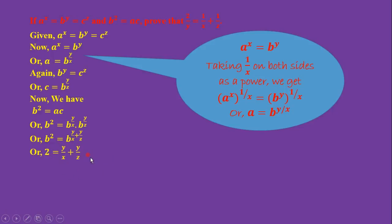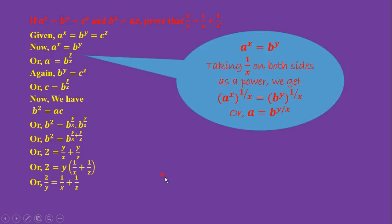We can write 2 = y/z + y/x. Taking y as common on the right side: 2 = y(1/x + 1/z). Therefore, 2/y = 1/x + 1/z. The theorem is proved. Thank you for watching.